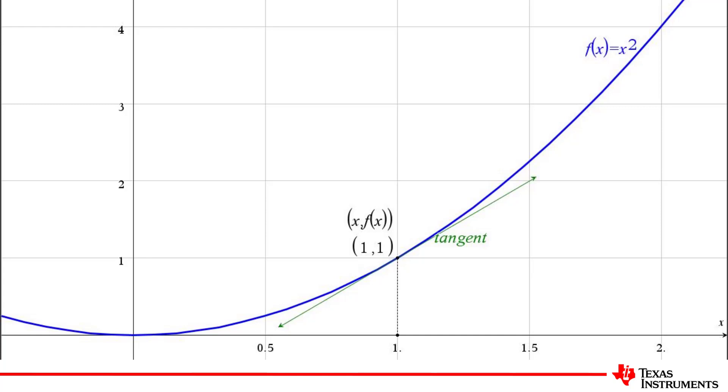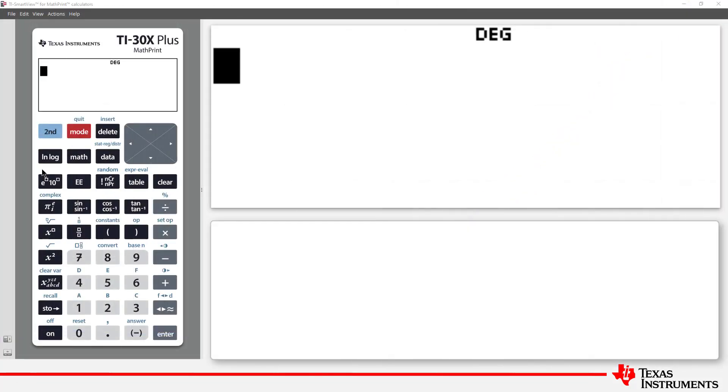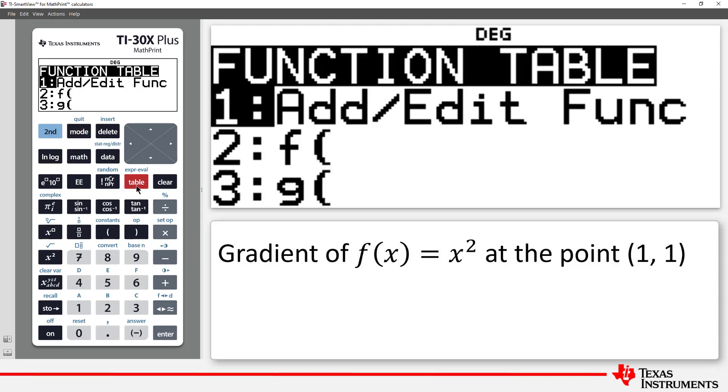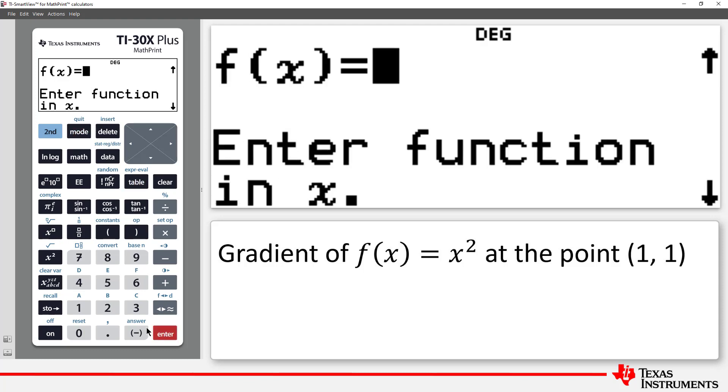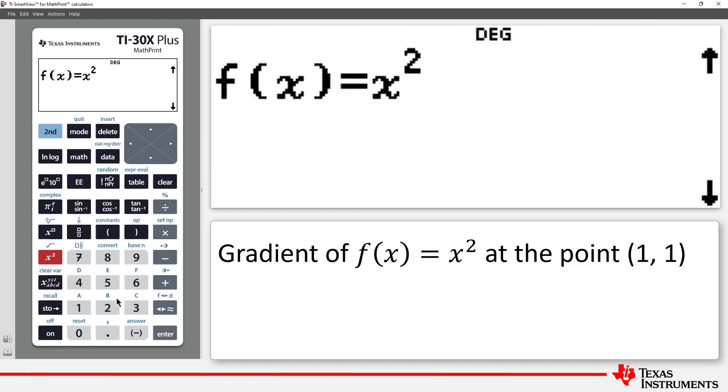Now let's try this using the TI-30X Plus MathPrint calculator. We'll explore the gradient of the point on the function f equals x squared. We start by defining f equal to x squared. Then press Enter.